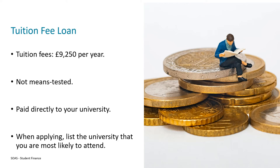The money provided to cover the cost of the fees is paid directly to the university, which is beneficial as it means you don't have to worry about receiving the money and then having to pay the university. It all happens automatically between the student finance company and the university, and the reason the student finance company know to pay the university is that when you make your application you list the university and course you'll be studying. If you don't have 100% confirmation of the university you'll be attending, that's absolutely okay — just list the university you're most likely to attend and if this changes later you simply log into the student finance portal and update your details.